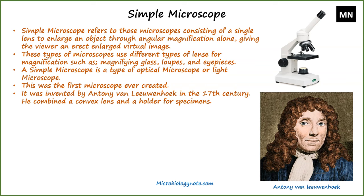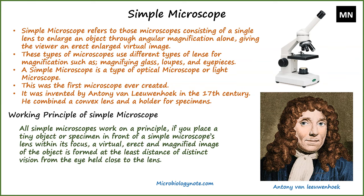These types of microscopes use different types of lenses for magnification such as magnifying glass, loupes, and eyepieces. All simple microscopes work on a principle: if you place a tiny object or specimen in front of a simple microscope's lens within its focus, a virtual, erect and magnified image of the object is formed at the least distance of distinct vision from the eye held close to the lens. On the right side you can see an image of a simple microscope.